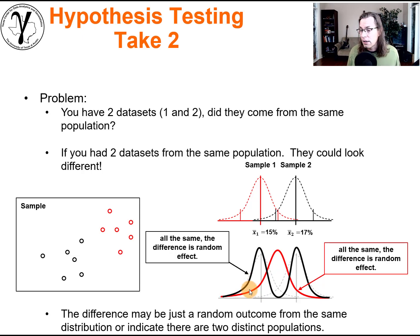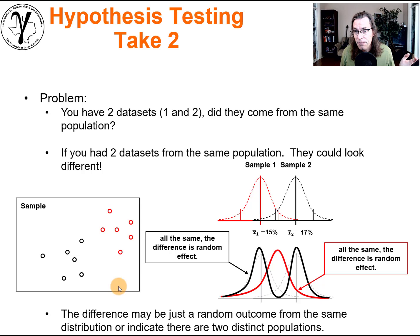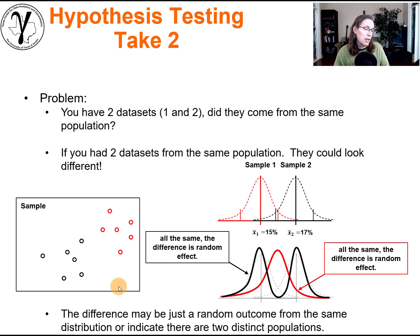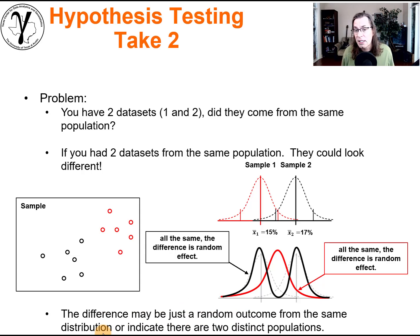Or the other thing that could be happening is that we in fact have two distinctly different distributions for different parts of this region. The difference may just be due to random outcomes. Because of the false belief in the law of small numbers, we expect every sample set to be representative of the underlying population in all of their statistics.